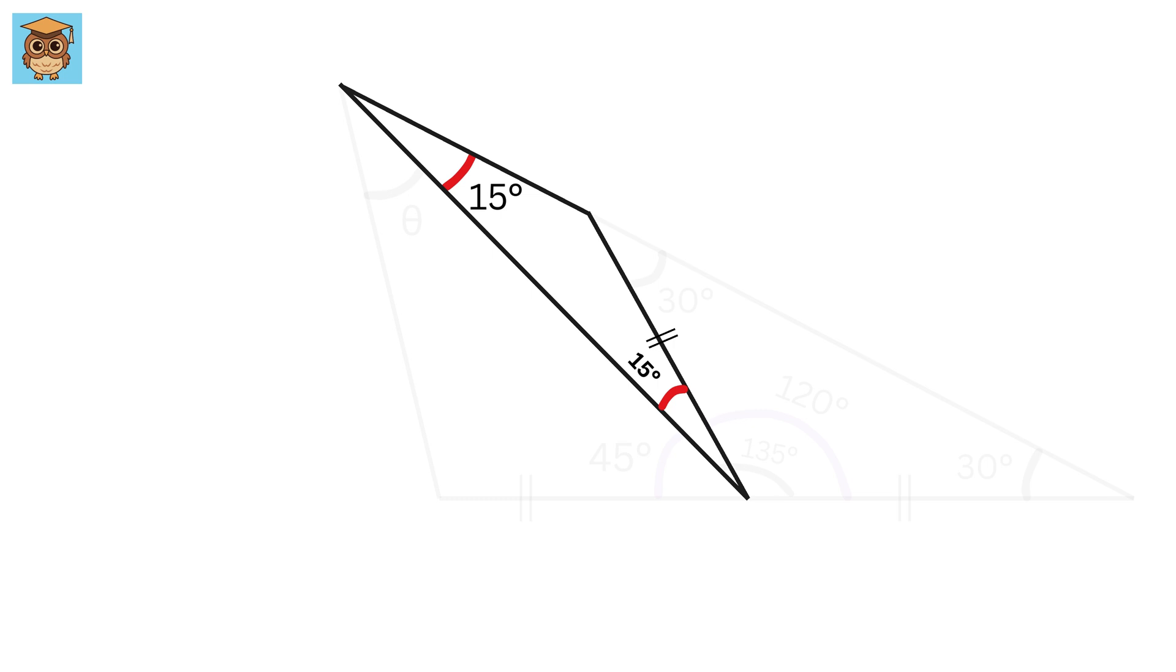Now, consider this triangle. Both of these angles are 15 degrees. So, this is also an isosceles triangle. Therefore, this side of the triangle will be the same as this side of the triangle.